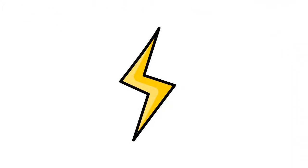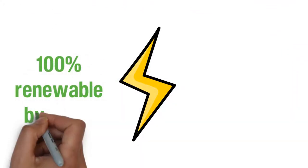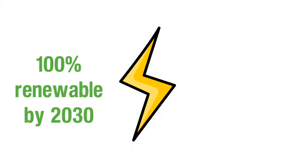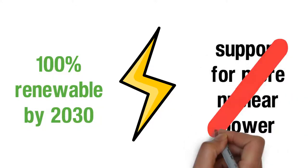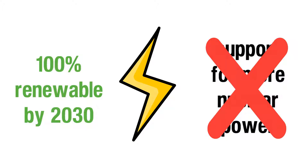Greens would invest in a smart grid for Suffolk to make it 100% renewable by 2030. And we'd end the council's support in principle for a new nuclear power station at Sizewell, ensuring that our energy supply will not leave a toxic legacy.